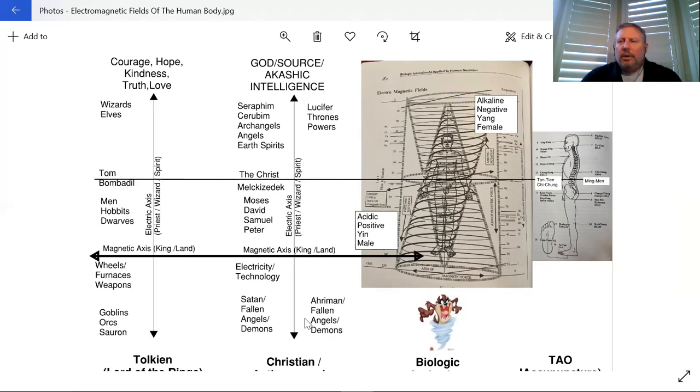Within this, at this top layer within Christianity, we have the seraphim, the cherubim, the archangels, the angels, and the earth spirits. These all are spiritual beings. They don't have physical bodies. They're outside the physical realm. They exist in a different plane.